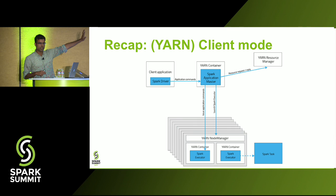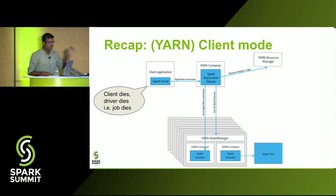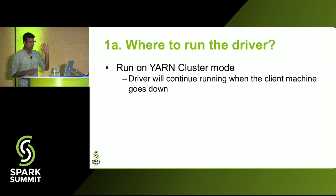Quick recap: if you're using YARN, you have a Spark driver — in YARN client mode the driver runs in your client application. In cluster mode, your driver runs on a YARN container on the cluster. So if you're using client mode and the client dies, the driver dies and your job dies. But in cluster mode, if your client dies, the driver is still running on the cluster.